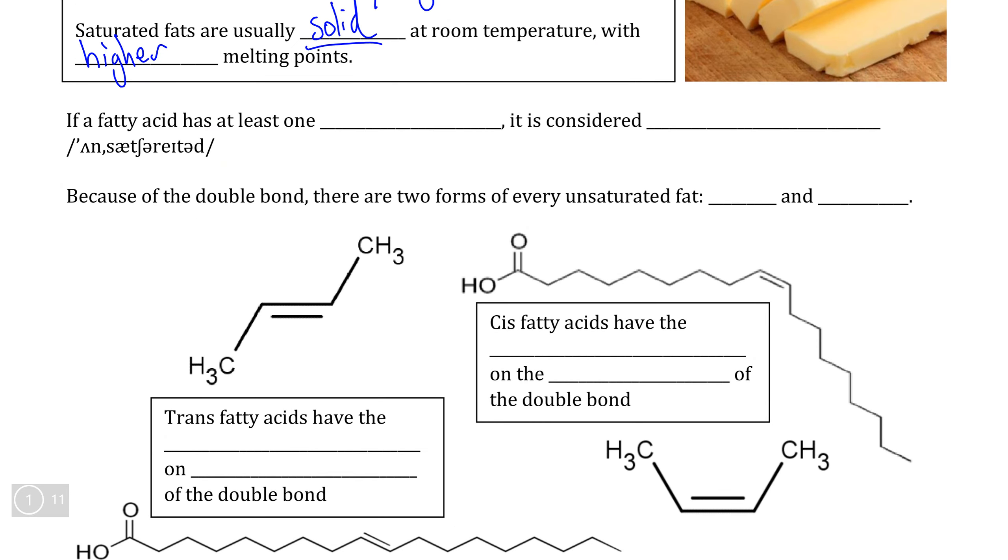If by contrast, we have a fatty acid that has at least one double bond, meaning that at least one of the carbon to carbon linkages within the hydrocarbon tail has at least one double bond.